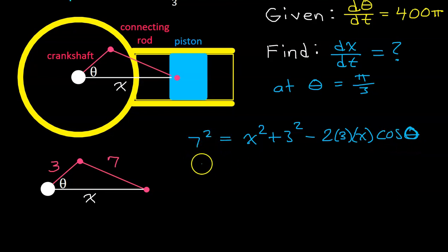That's what the law of cosines would look like. We might as well go ahead and simplify this a tiny bit. This is going to be 49 is equal to x squared plus 9 minus 6x cosine theta. As we often do, we're going to use implicit differentiation. And we will differentiate both sides of this equation so that we can get d theta dt and dx dt to appear.